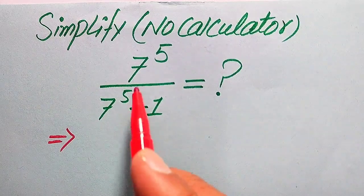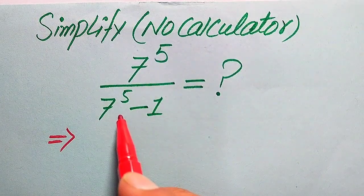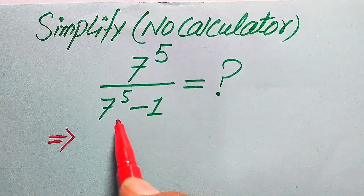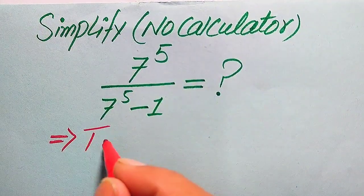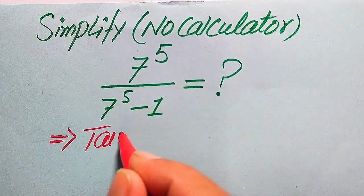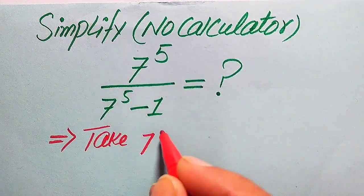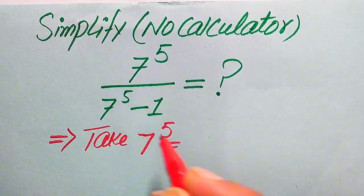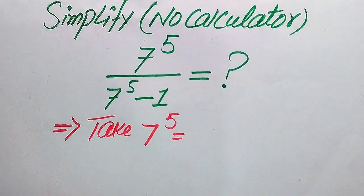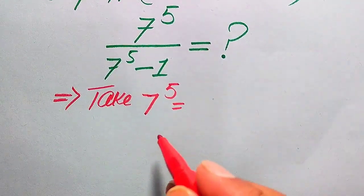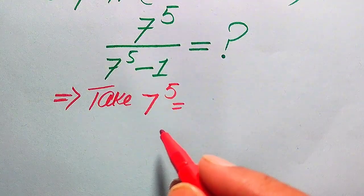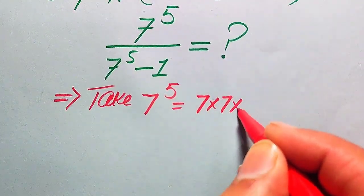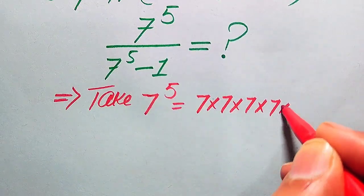Now we move toward the solution. Here you see this is 7 to the power of 5. First we need to find the value of 7 to the power of 5. The meaning of 7 to the power of 5 is that we multiply 7 by itself 5 times.